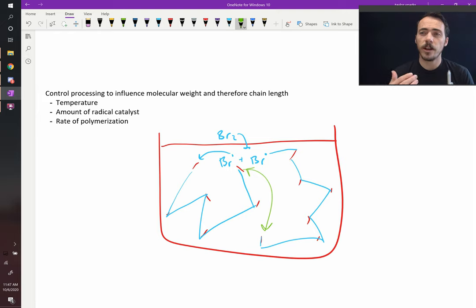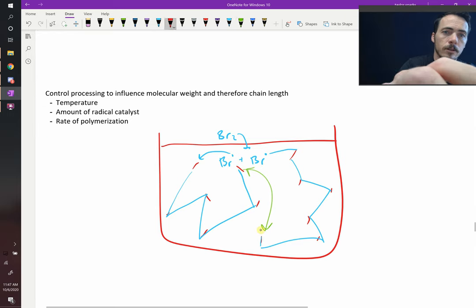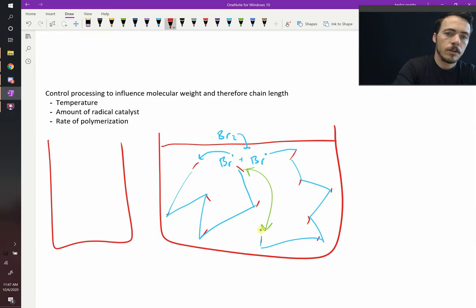The less initiator that you add, the fewer free radical catalysts that you add, it's going to tend to have longer chains. Because in the end, all of your radical, if all of your radical gets used up,